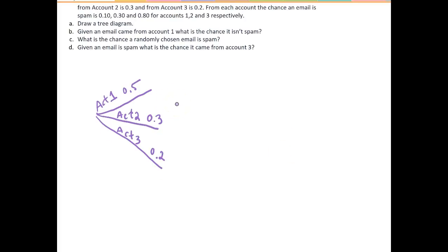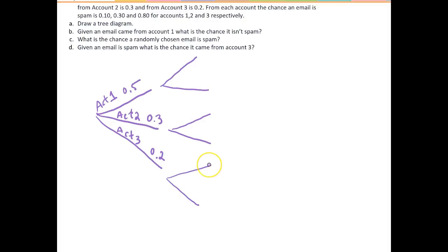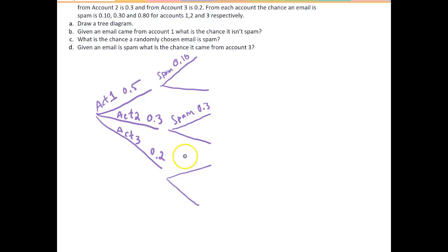Next we want to add our conditional branches. In a tree diagram the consecutive branches are all conditional on the previous branches. So this branch here is the probability an email is spam given it came from account 1, which is 0.10. If it came from account 2 the likelihood it's spam is 0.30, and the chance it's spam if it came from account 3 is 0.80.